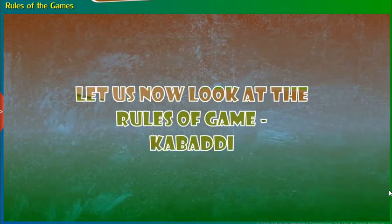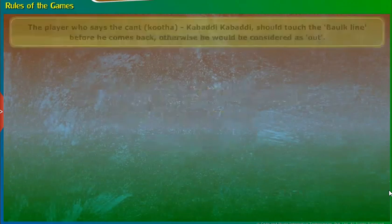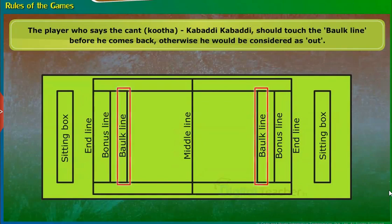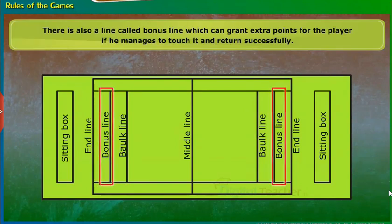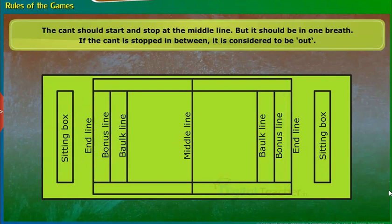Let us now look at the rules of game Kabaddi. The player who says the Kant or Kuta Kabaddi Kabaddi should touch the bulk line before he comes back, otherwise he would be considered as out. There is also a line called bonus line which can grant extra points for the player if he manages to touch it and return successfully. The Kant should start and stop at the middle line, but it should be in one breath. If the Kant is stopped in between, it is considered to be out.